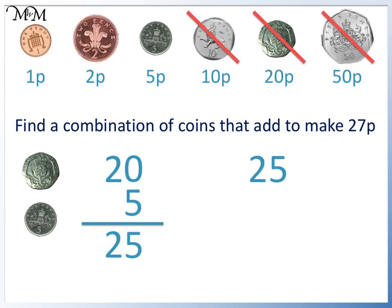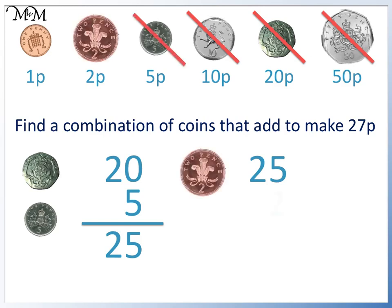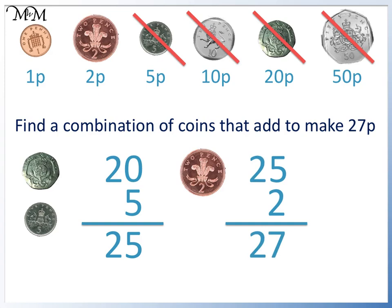We have 25p and need 27p, so we need 2 more. 5p is too much. Here is 2p. We can see that 5 plus 2 equals 7, plus two tens make 27. 27p is made from a 20p, a 5p and a 2p.